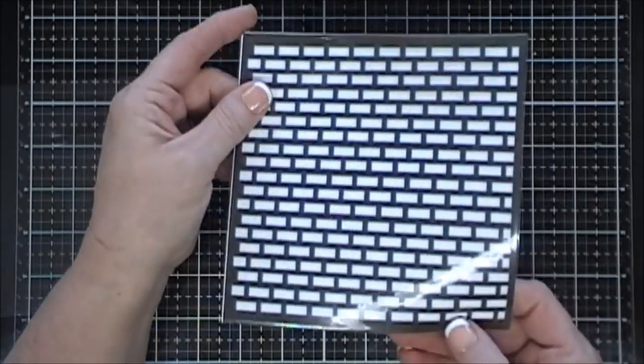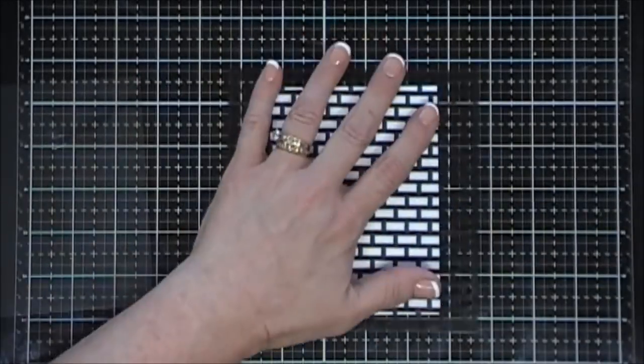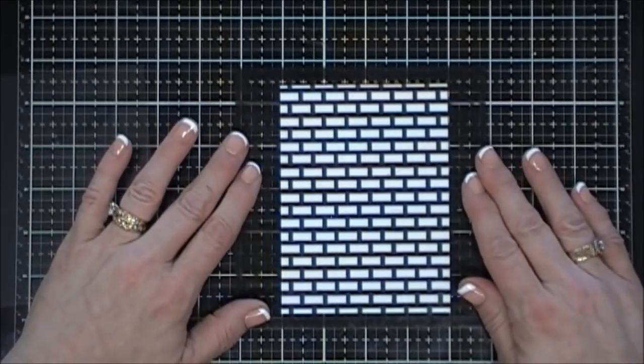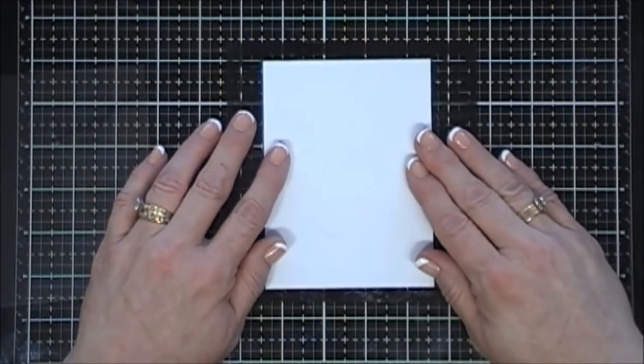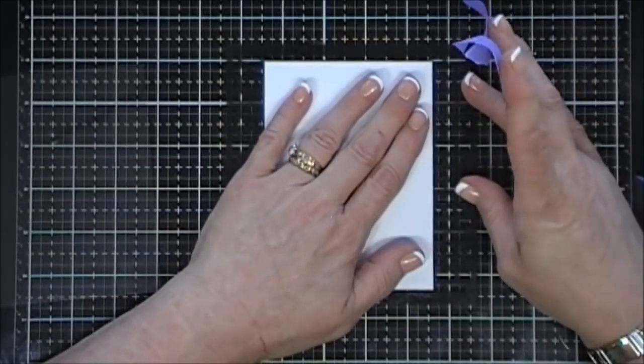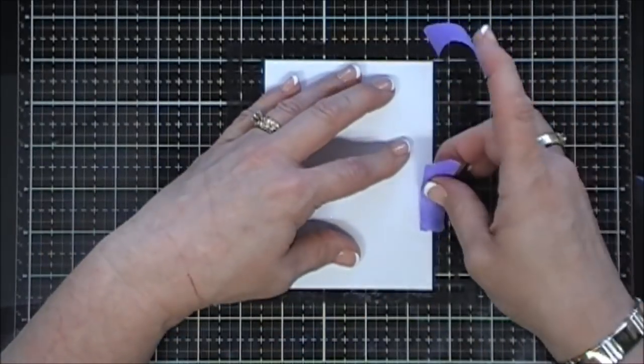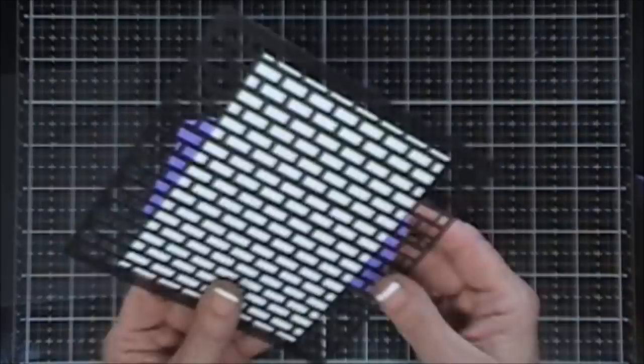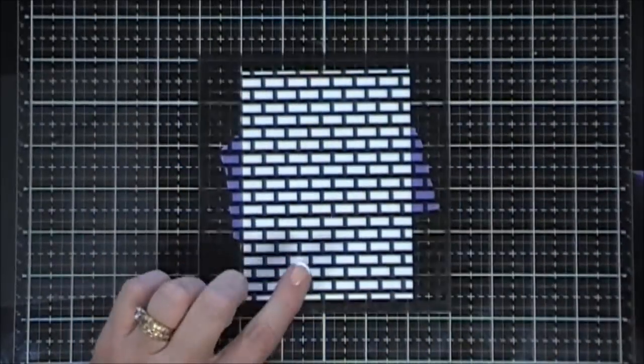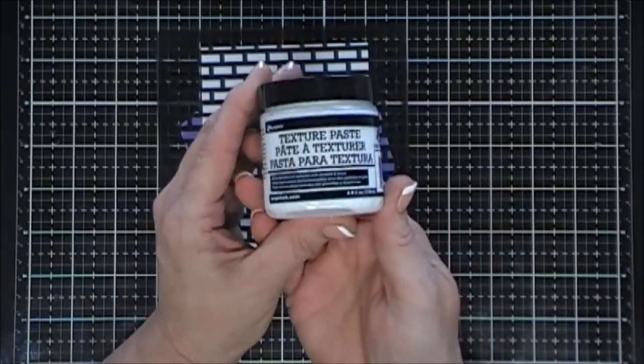Okay, now leaving the die cut piece on the inside, we're going to do some stenciling. I'm going to grab a brick stencil from my stash. Now I have some texture paste that's new to me, and I have to tell you, I love this stuff. I'm just going to tape down my stencil to my front panel here.